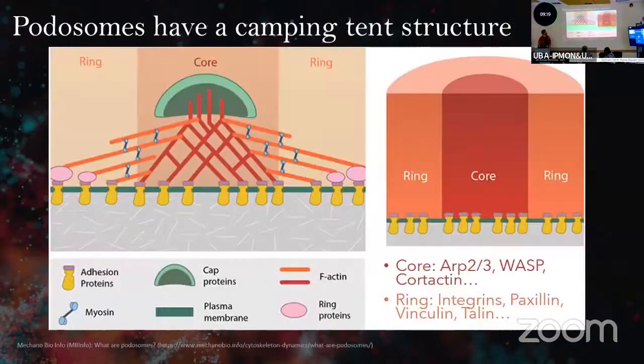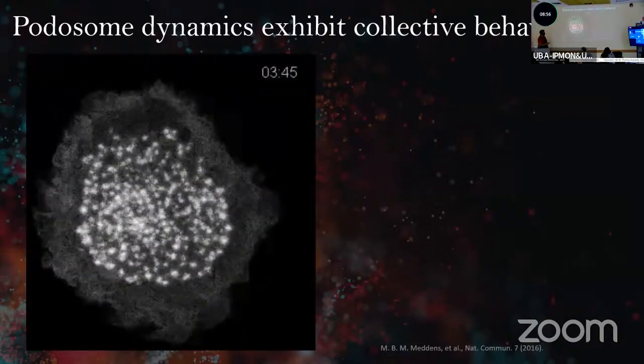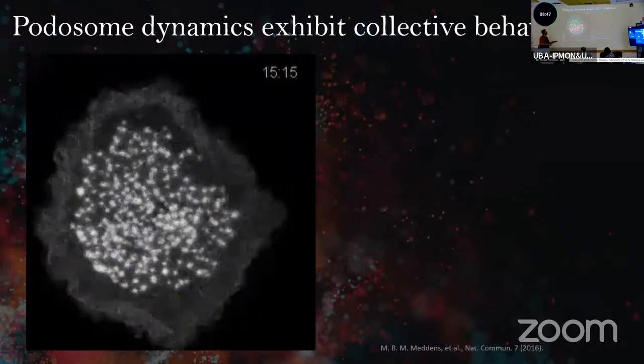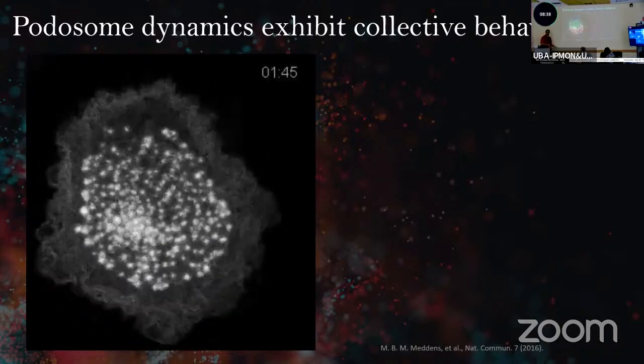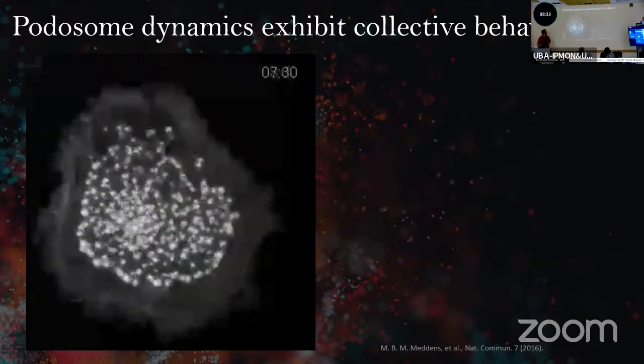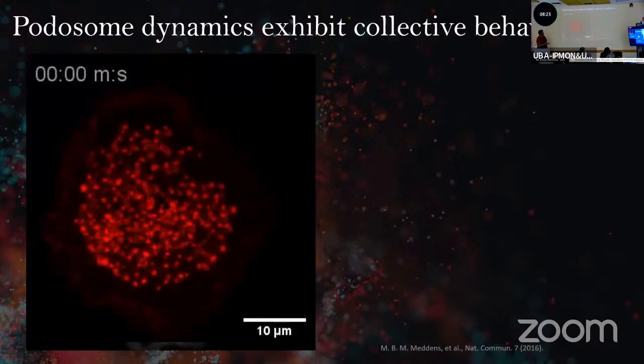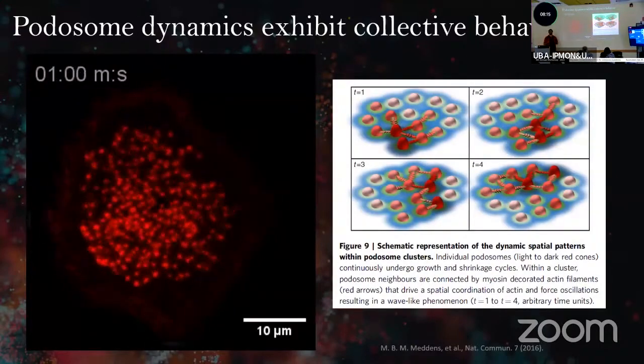They have a camping stand structure. You have the strings or cords pulling the core in the center, and the core has this actin center that's polymerizing towards the bottom, continuously pushing down. What called our attention about podosomes is they exhibit collective behavior. This is visible in this data where you have a cell marked with LifeAct, and you can see the actin structure of each podosome that appears and disappears in different regions. Some move laterally, but what's more interesting is how the intensity of each podosome fluctuates in time, and how the neighbors' podosome intensity fluctuates with respect to this one.